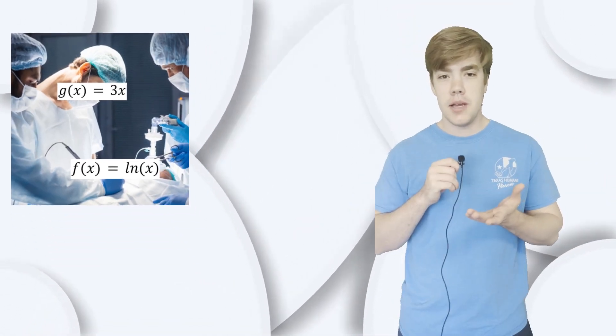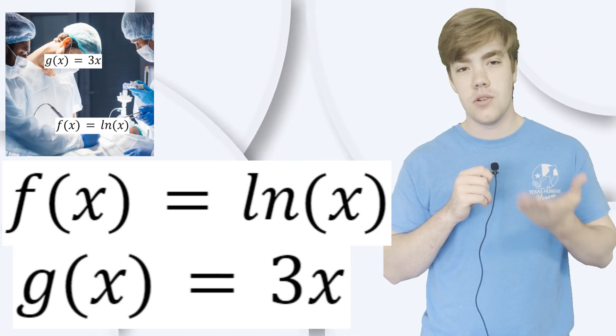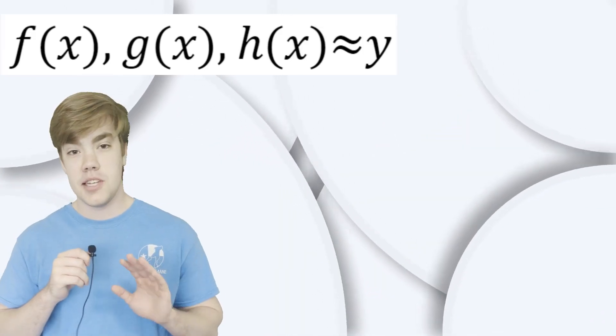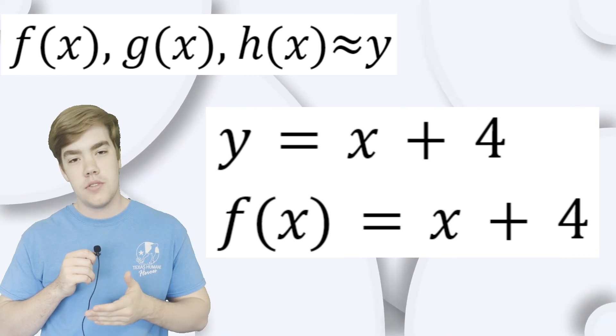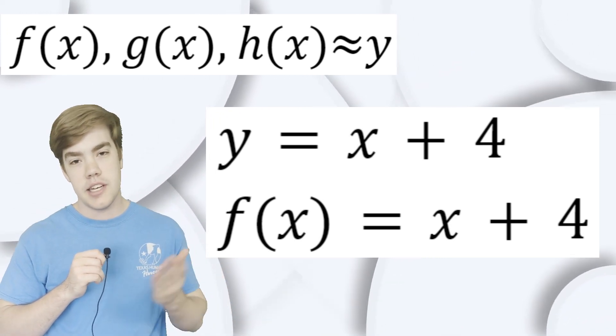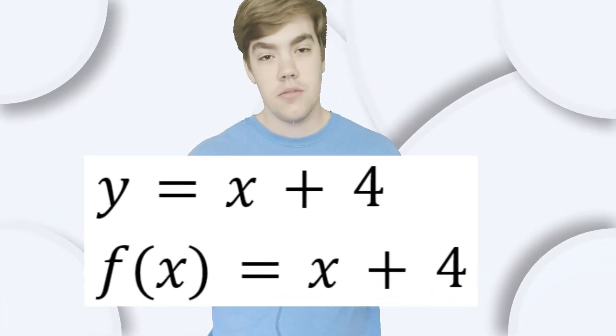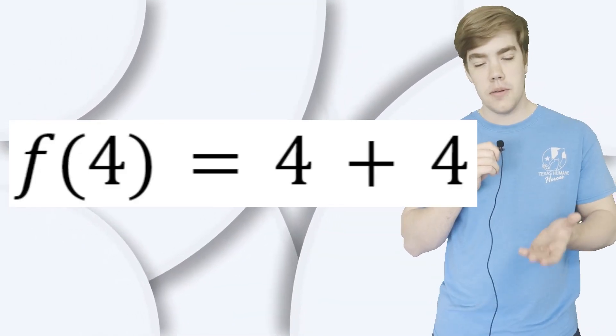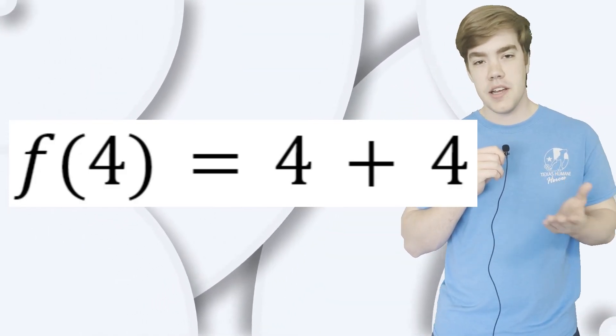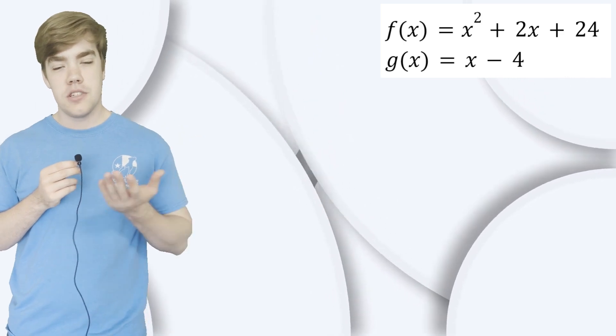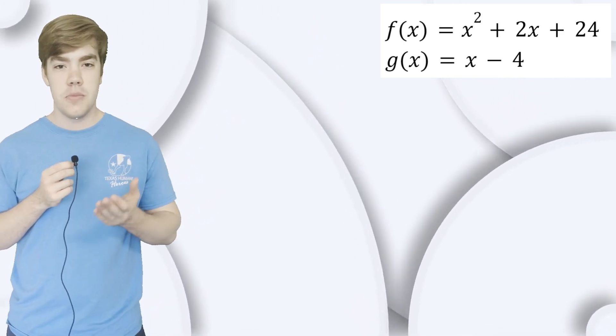But the other thing with functions that you ought to know is combining functions. Your functions may be labeled as f of x, g of x, or h of x. In this case, that's pretty much the same thing as y. So y equals x plus 4 is the same thing as f of x equals x plus 4. f just stands for function with respect to x. So for example, if I put f of 4, our function instead of being x plus 4 would just be 4 plus 4. But we can add, subtract, multiply, and divide these functions within each other. So let's talk about that real quick. So our f of x will be x squared plus 2x plus 24, and our g of x will be x minus 4. We can manipulate these functions in different ways.